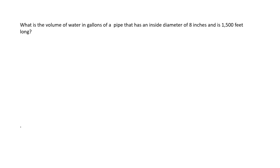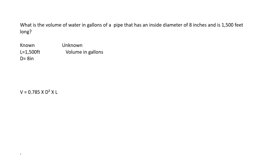What is the volume of water in gallons of a pipe that has an inside diameter of 8 inches and is 1,500 feet long? With our word problems, we're going to pull out our knowns and unknowns so it's easier to keep track of. What we know is that the length of the pipe is 1,500 feet, the diameter is 8 inches, and we're looking for the volume in gallons. The formula again is 0.785 times diameter squared times length, and we're going to start to realize that this is going to be in feet, so we're going to have to convert our 8 inches into feet.